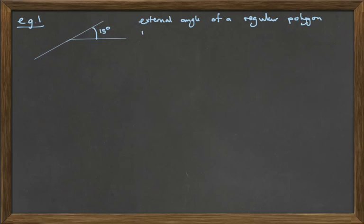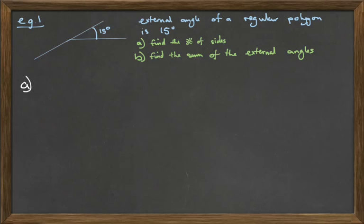Final example. So, I hope you're still watching. Please bear with me. We have this external angle. This external angle of a regular polygon. So, we know from the previous page that all the external angles and all the internal angles will be exactly the same. So, given that it's 15 degrees, the question is, find the number of sides and, B, find the sum of the external angles.